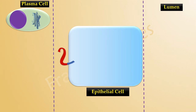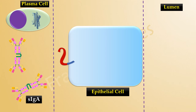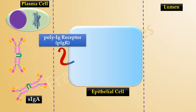The B cells, which are located beneath the mucosal surfaces, differentiate into IgA-producing plasma cells. These plasma cells synthesize and release polymeric IgA antibodies. Recall that the J-chain is also synthesized inside the plasma cell, so these are secreted IgA antibodies.